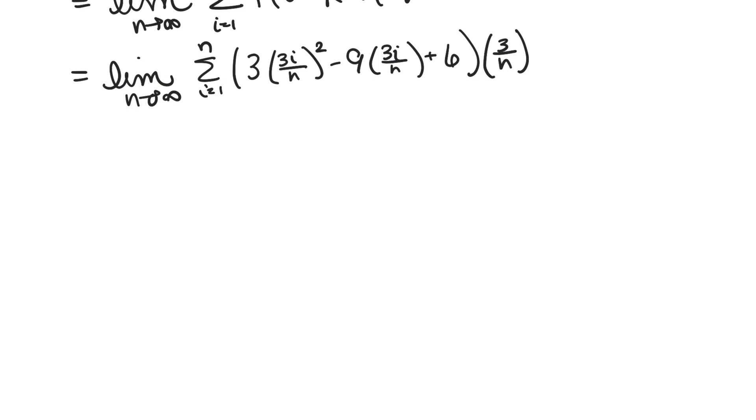Alright, so we can use our sigma notation rules to simplify this. This is going to be the sum i goes from 1 to n of 3 times 3 squared which is 9 over n squared times i squared, plus the sum i goes from 1 to n of negative 9 times 3 over n times i, plus the sum i goes from 1 to n of 6.